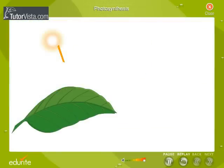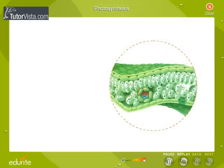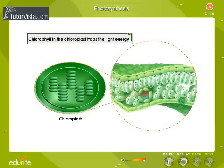This process requires sunlight. Sunlight shines through the top of the leaf and reaches the underlying layer of cells. The green pigment chlorophyll in the chloroplast traps the light energy.